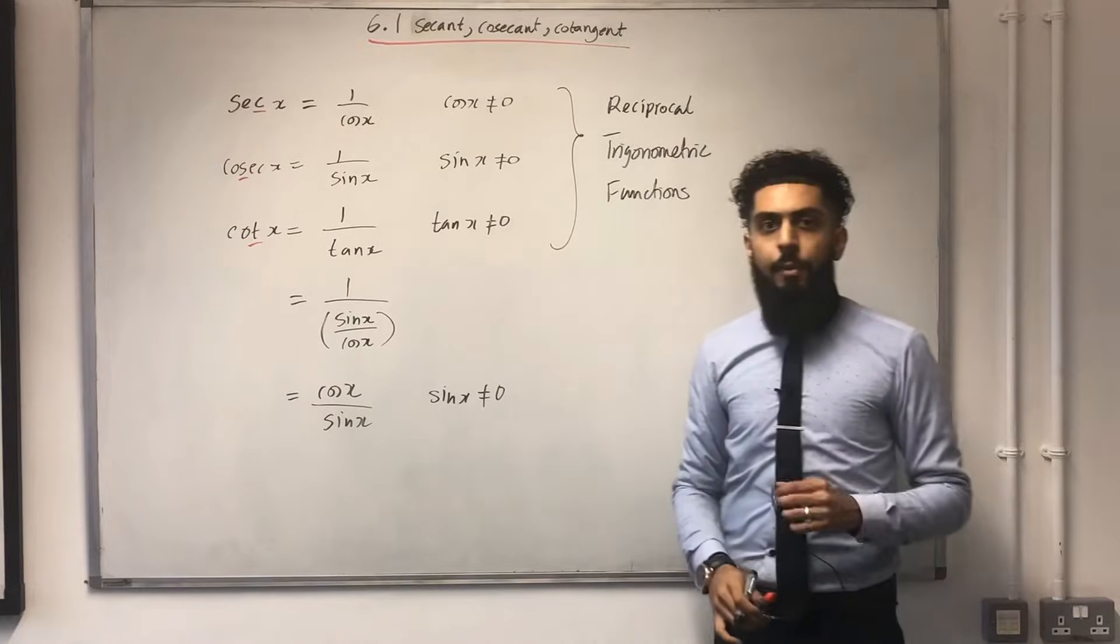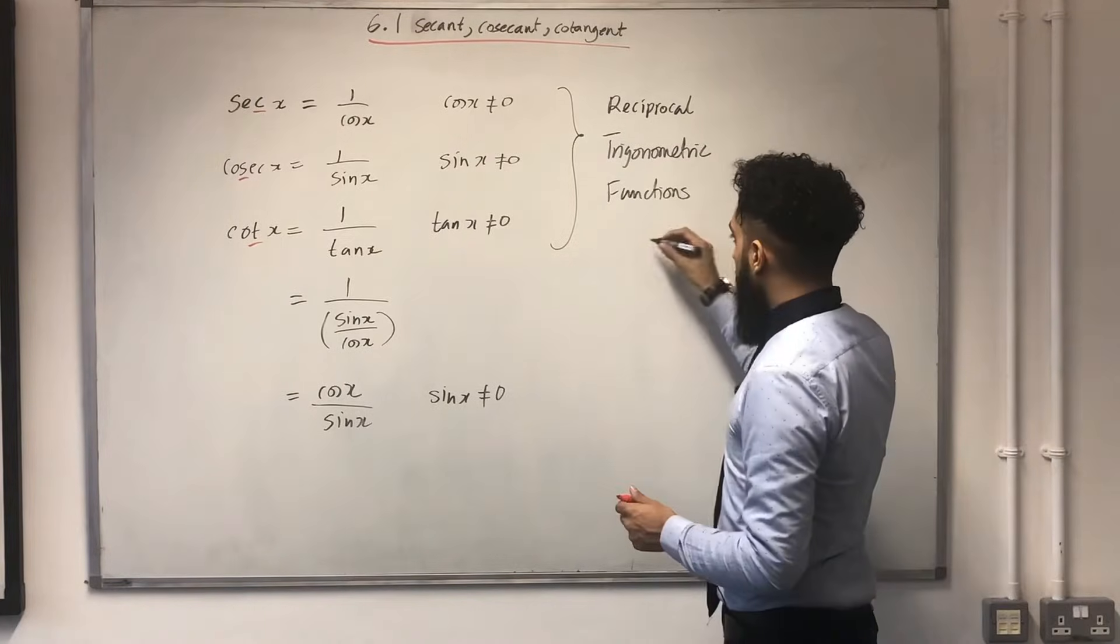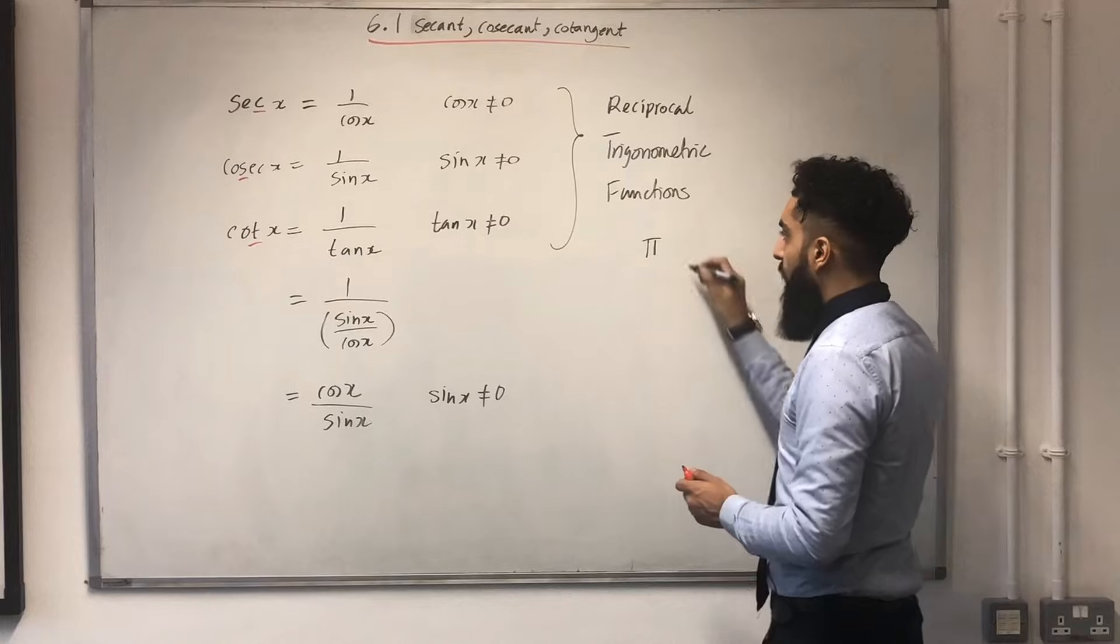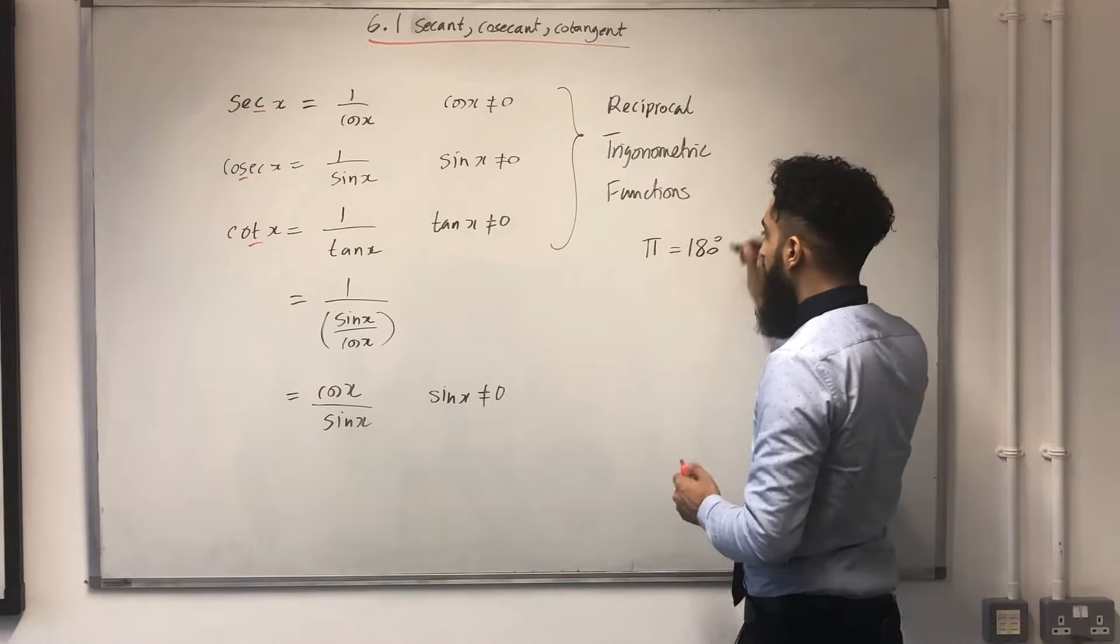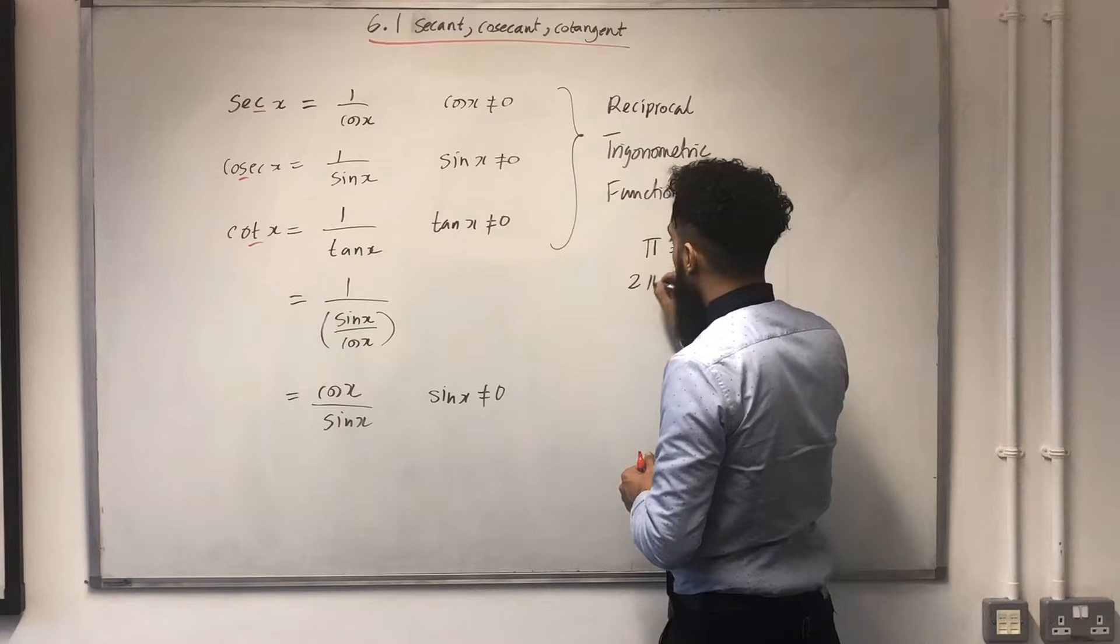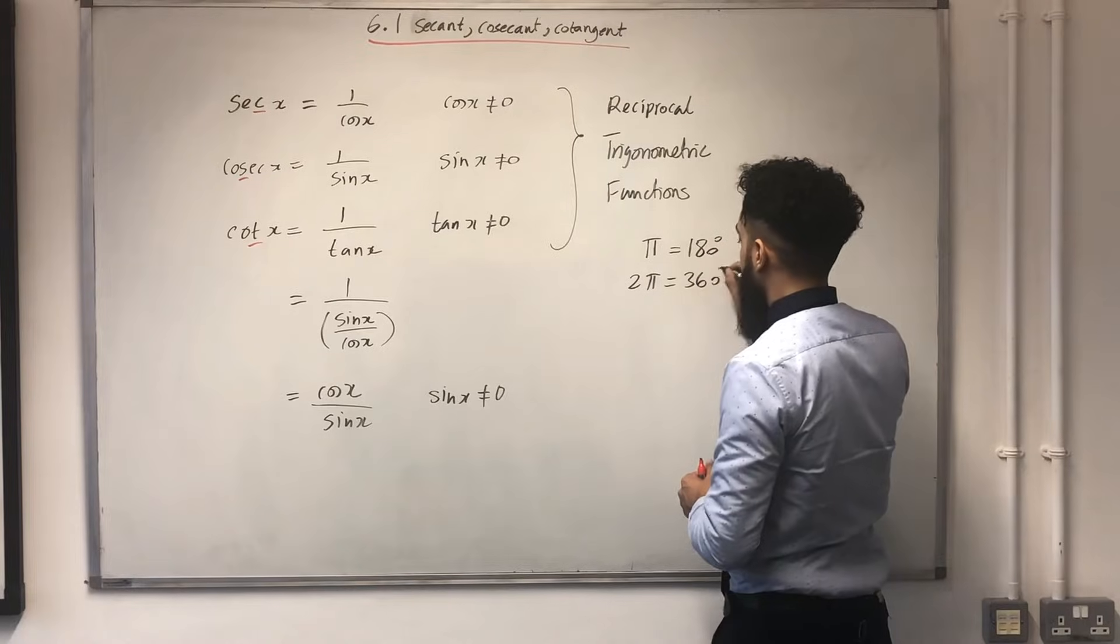Now, let's recap radians and degrees. The first one is π radians. That's equivalent to 180 degrees. Therefore, 2π will be 360 degrees. And so on.